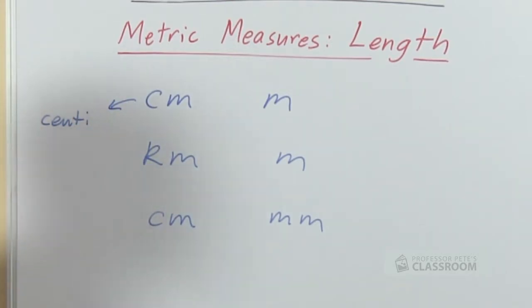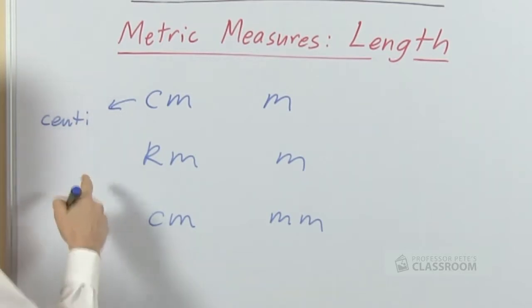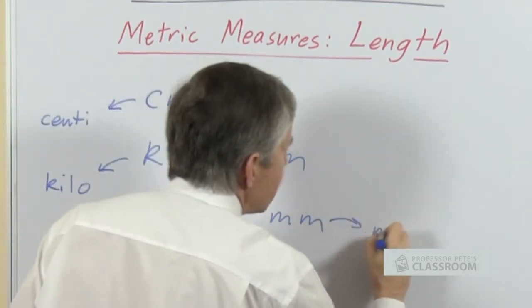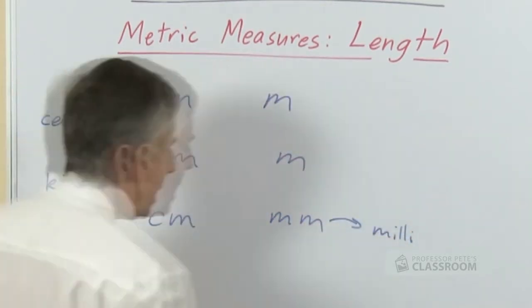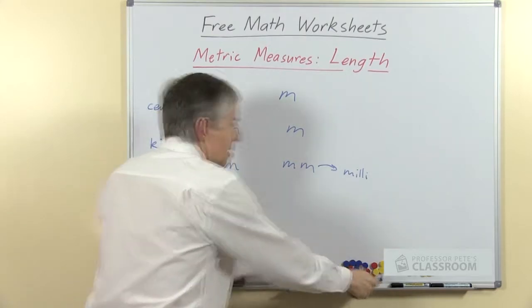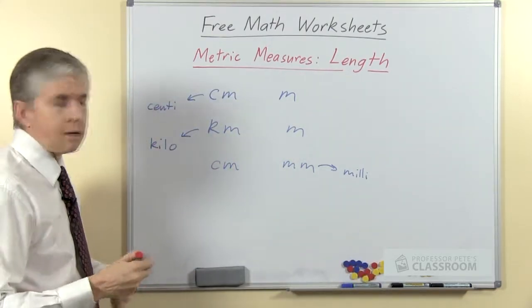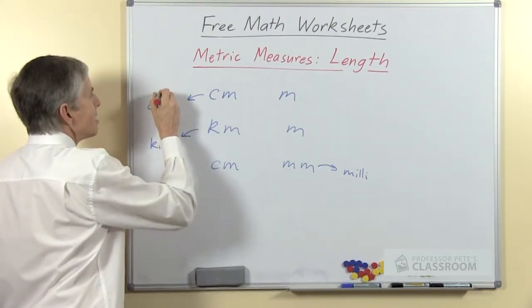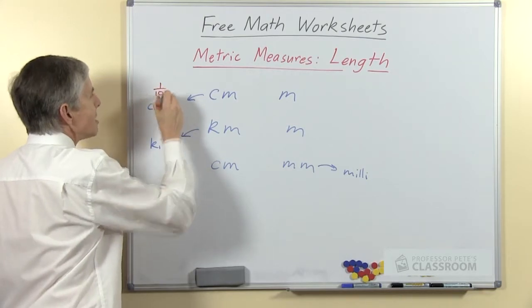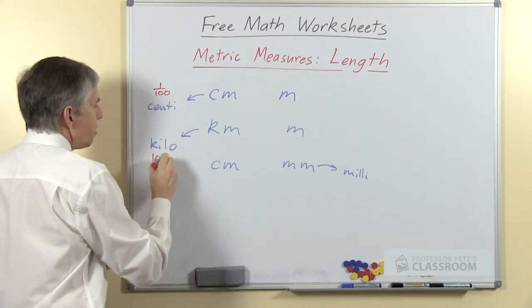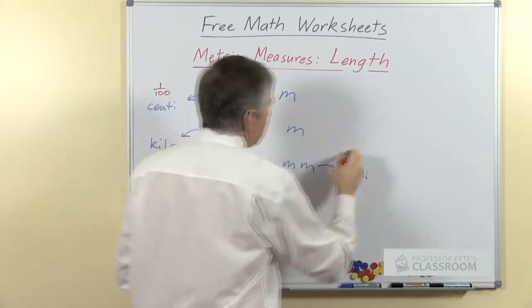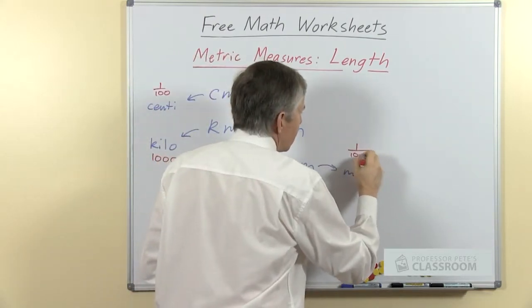The centimeter has a prefix, centi, in front of the word meter. The kilometer similarly has kilo and the millimeter has the prefix milli, and those prefixes have very precise mathematical meanings. Centi means a hundredth, kilo means a thousand, and milli means a thousandth.